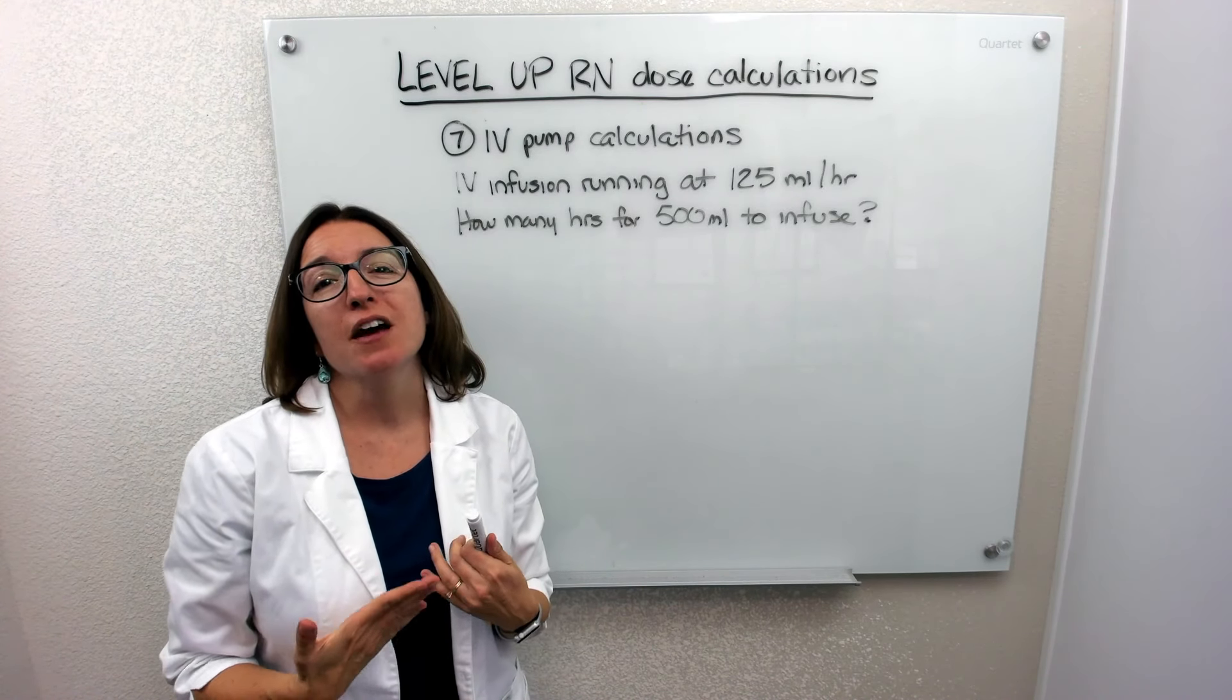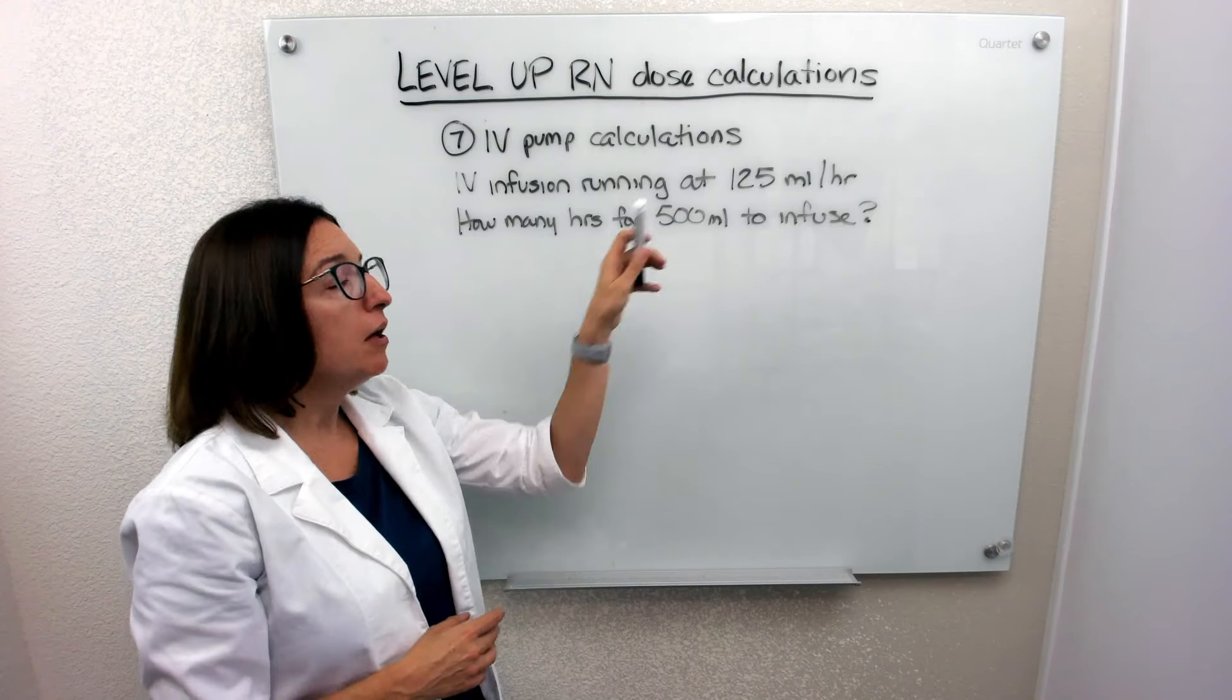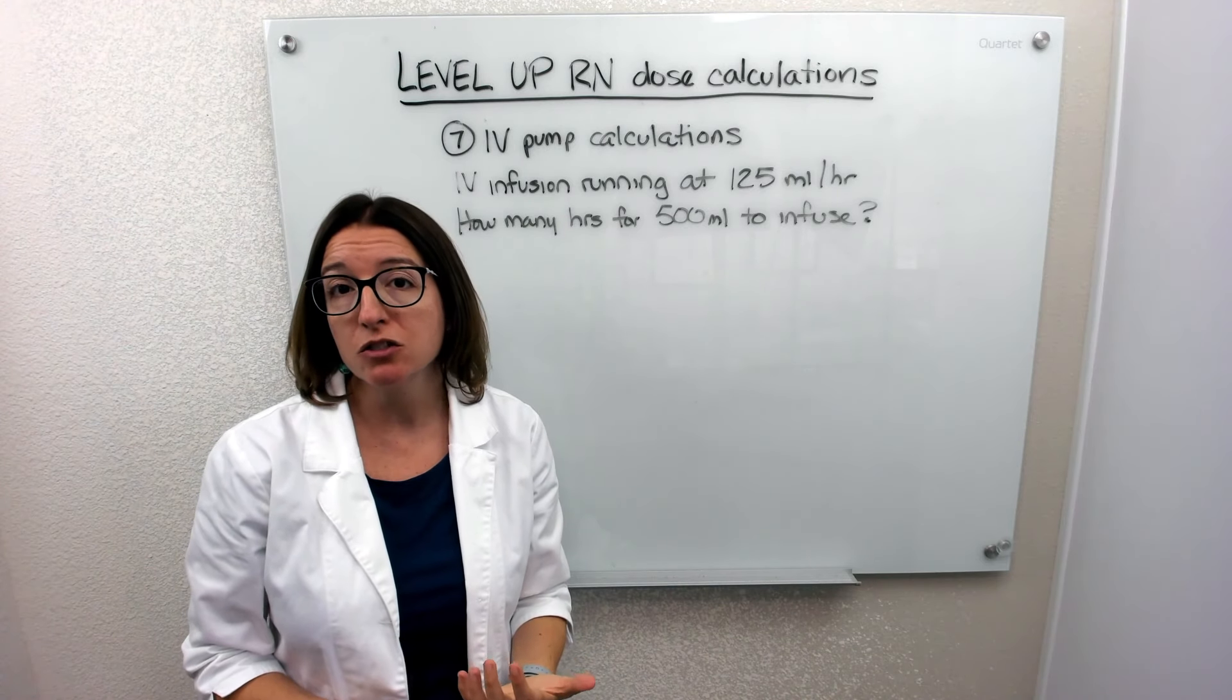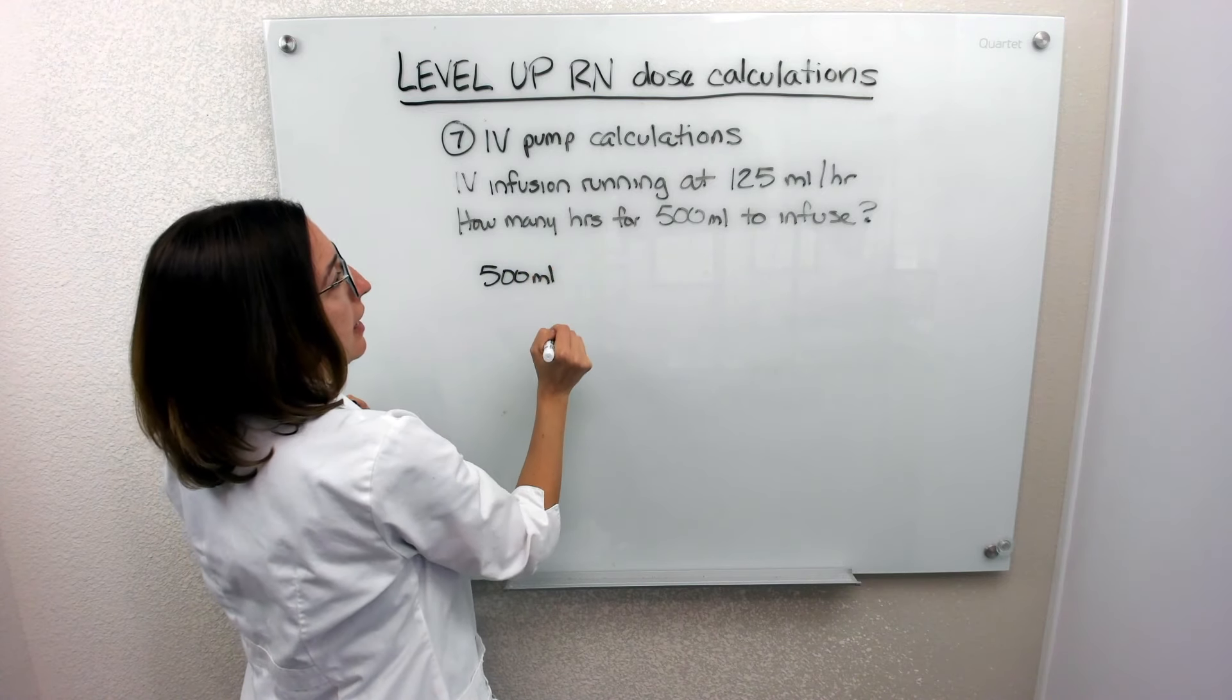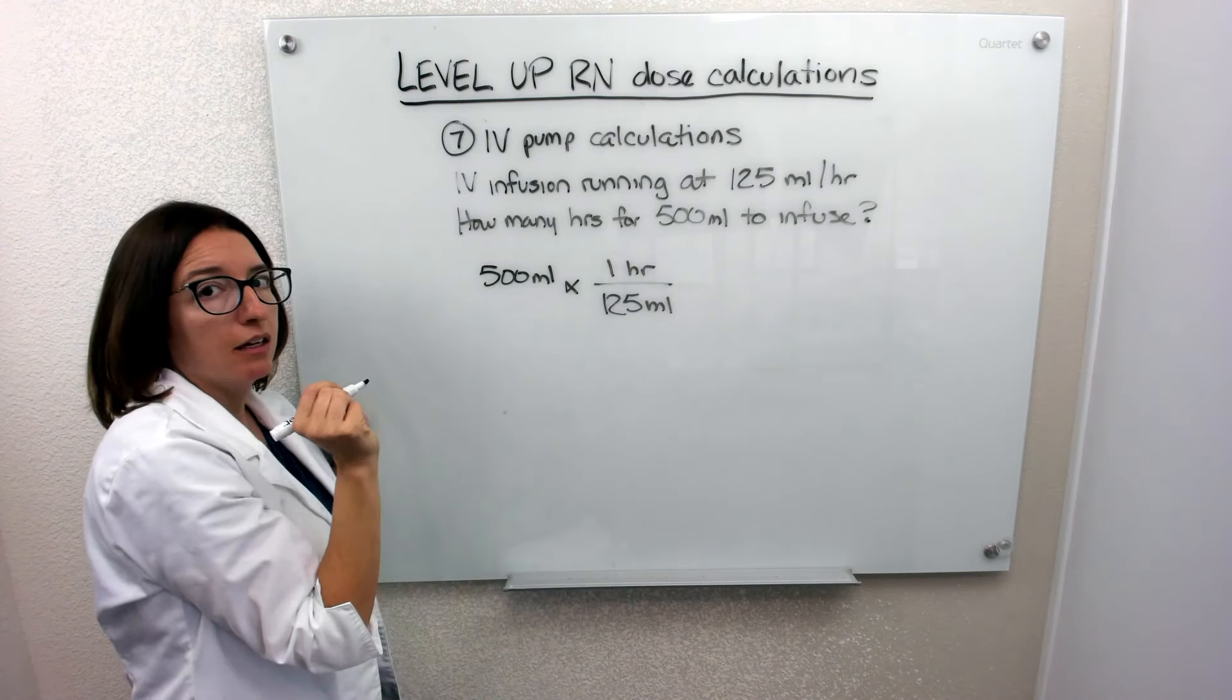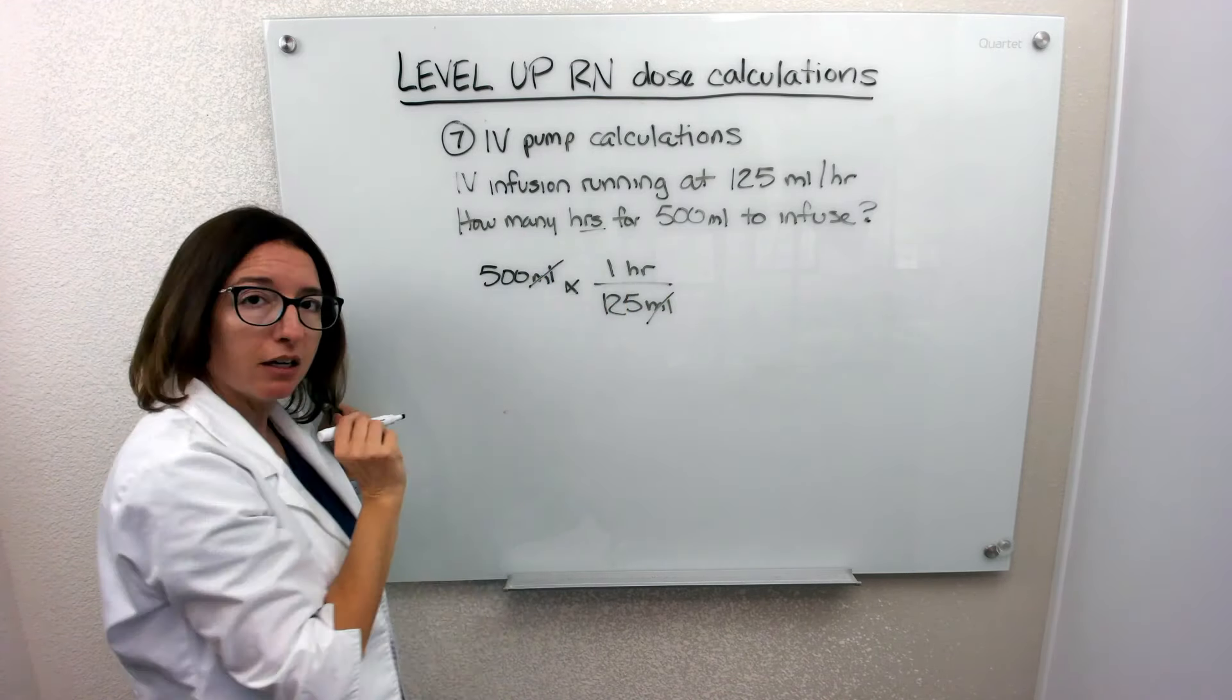All right. Number seven deals with another IV pump calculation. In this scenario, our pump is running at 125 milliliters per hour. And the question asks us, how many hours will it take for 500 milliliters to infuse? So we have 500 milliliters and we are infusing at 125 milliliters in one hour. So we can cross off our milliliters and we'll end up with hours as our unit of measure, which is what it's asking for here in the question.